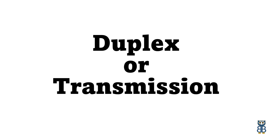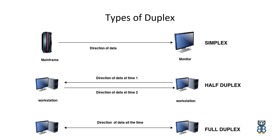Let's move ahead and understand duplex types, or transmission modes. A data transmission mode describes how two devices in a network communicate or exchange data. It specifies the direction in which signals travel over the media and the number of signals that can traverse the media at any given time. There are three types of transmission modes: simplex, half-duplex, and full-duplex.